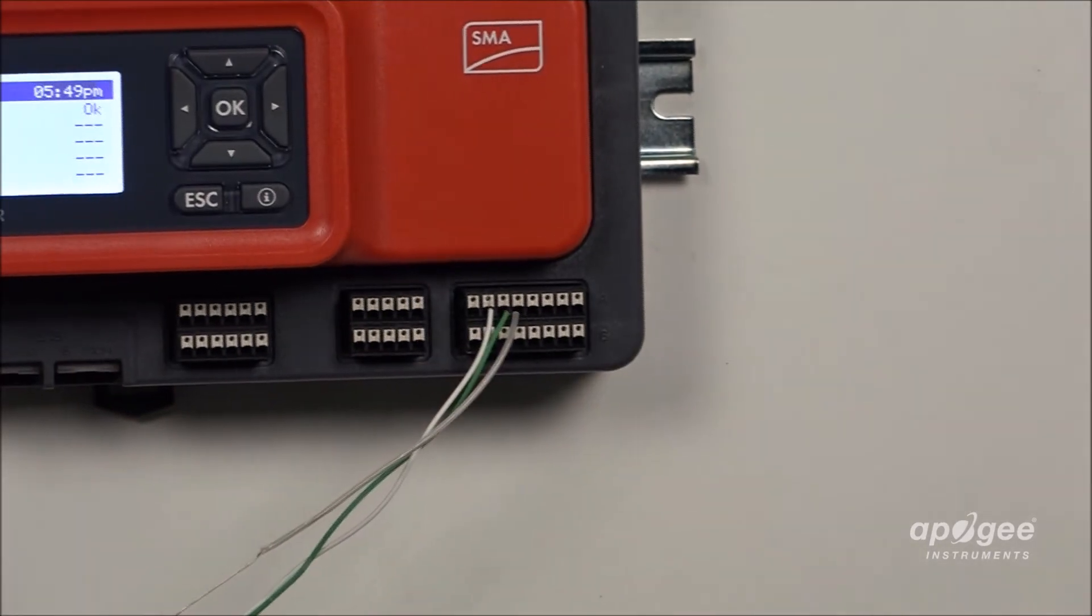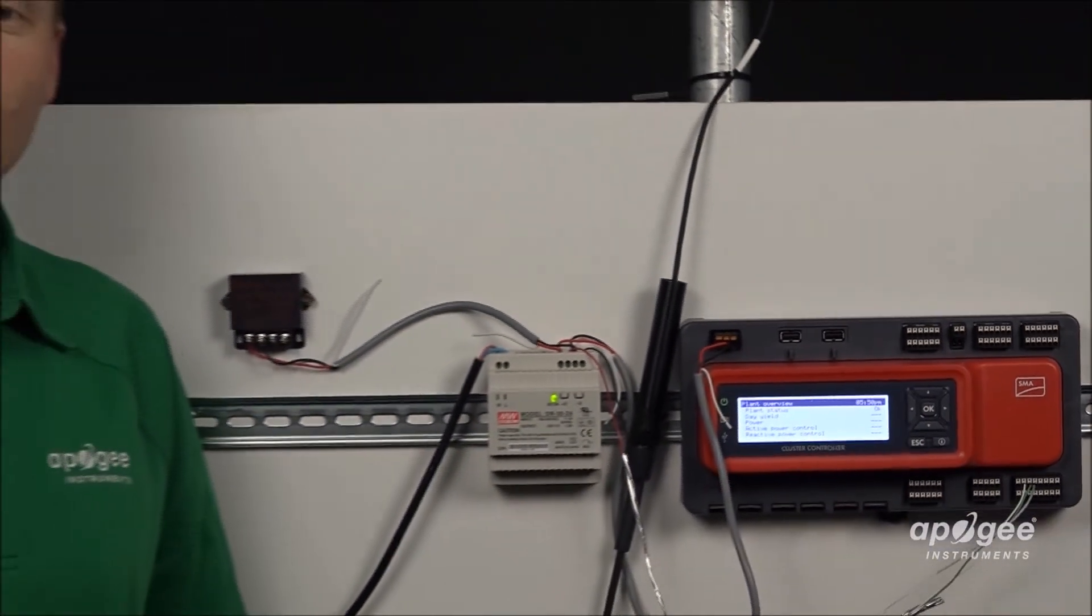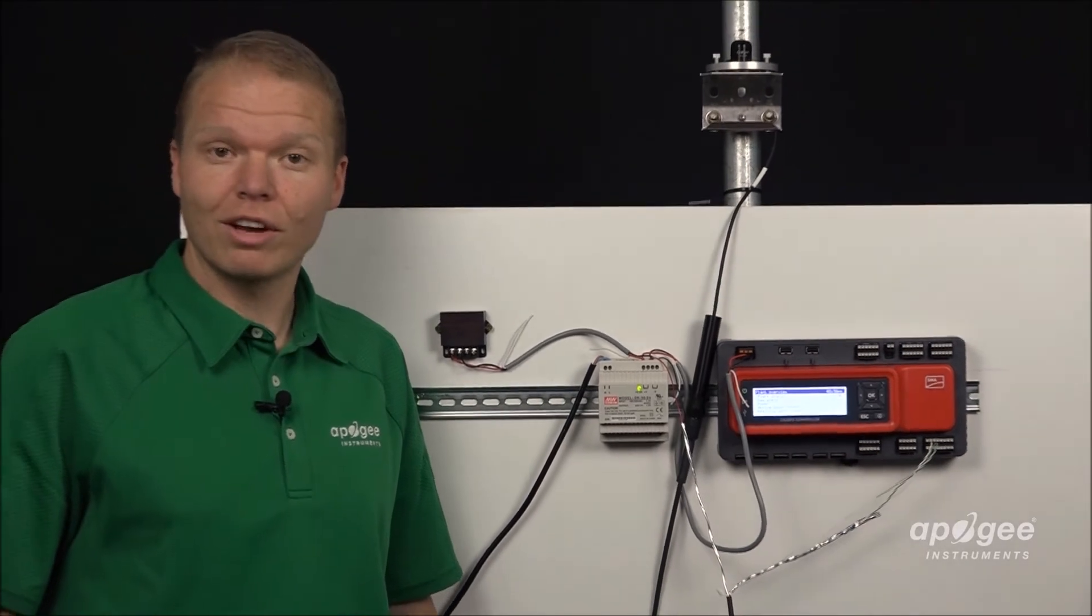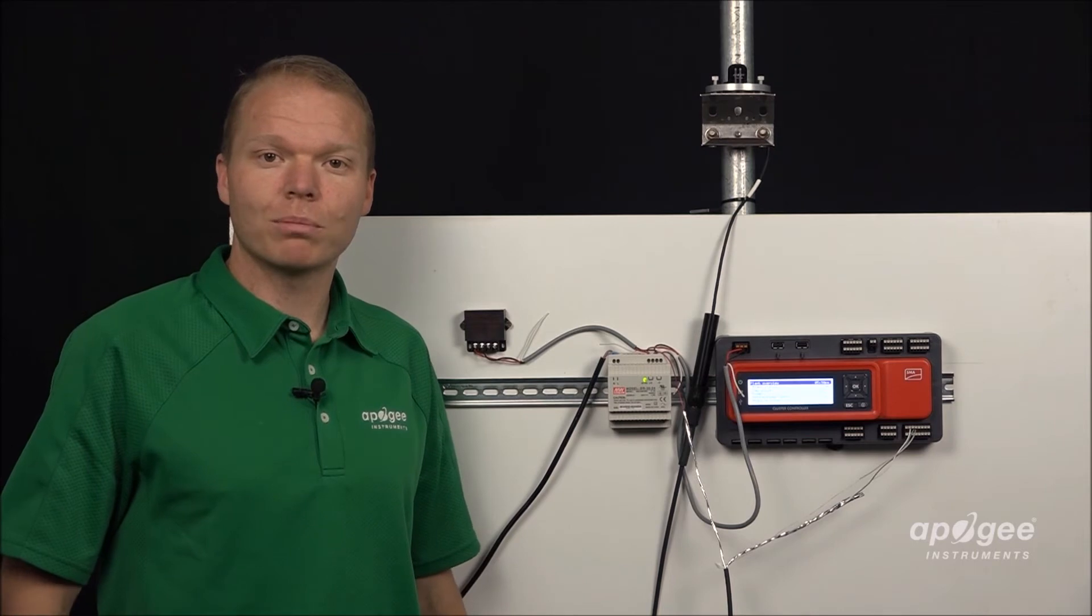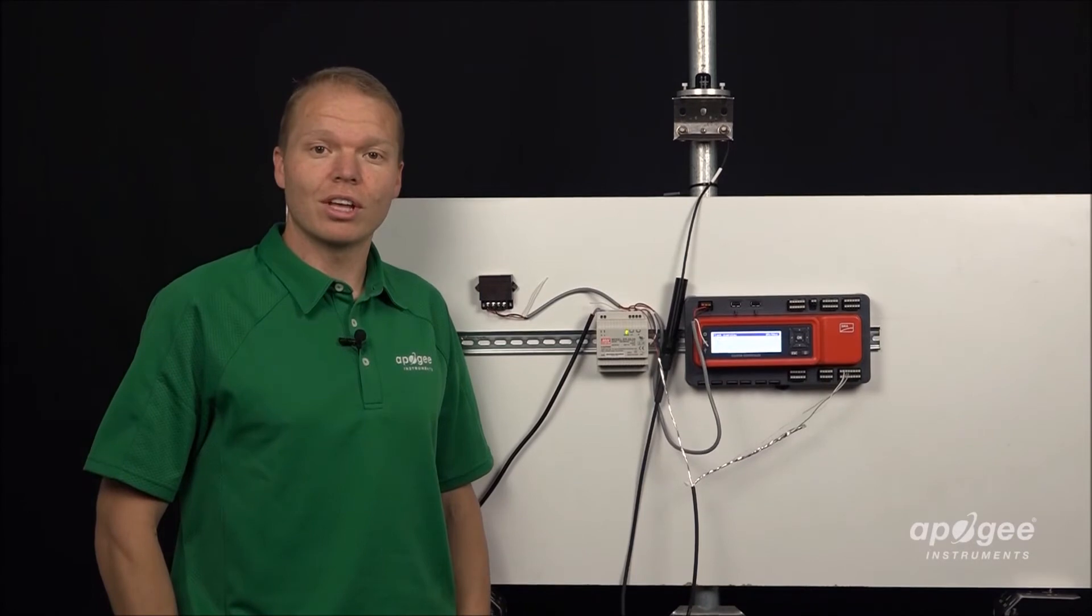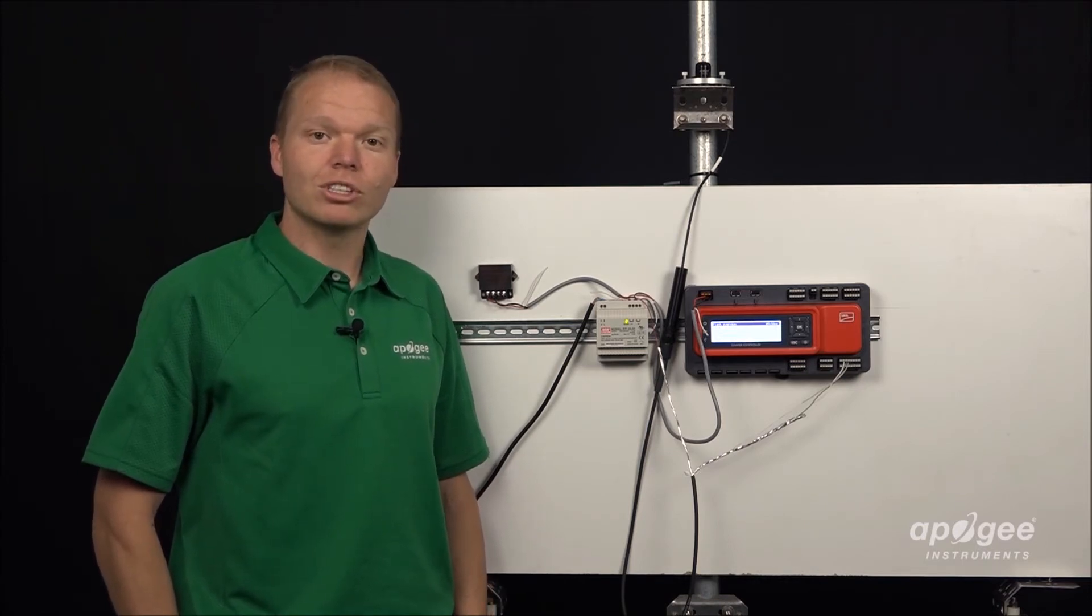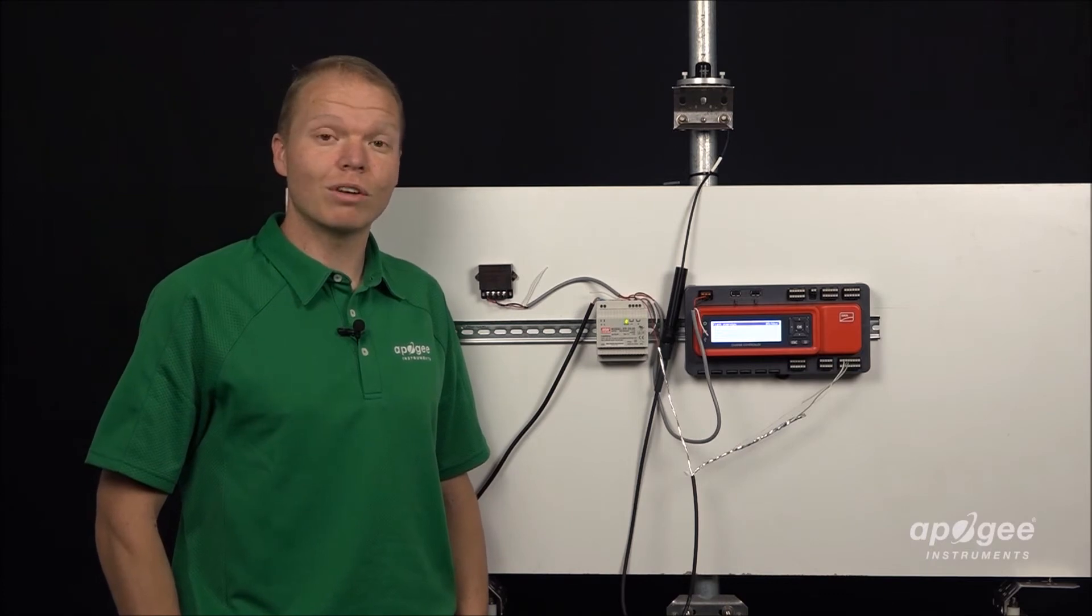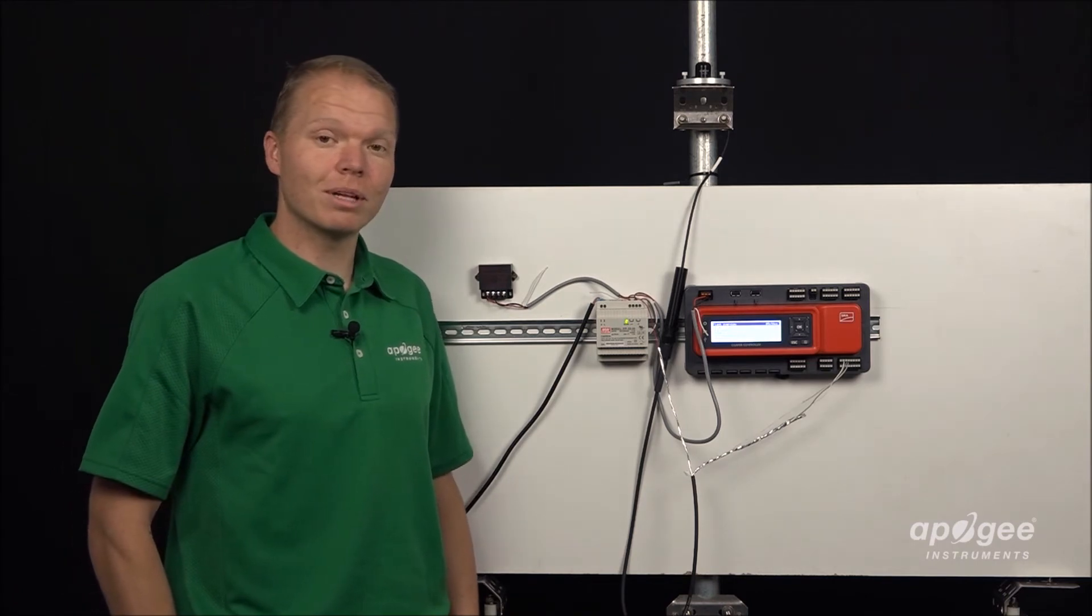So that's how you wire up the sensor itself. The next step is to change the installation curve and you do that through the user interface for the SMA cluster controller. Once you have that interface pulled up on your computer, navigate to meteorology, then environmental, then irradiance sensor, then characteristic curve. When you're there you just need to change it to 0 to 1250 watts per meter square and as a reminder this is a 4 to 20 milliamp sensor.